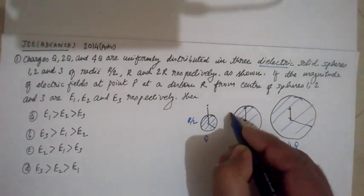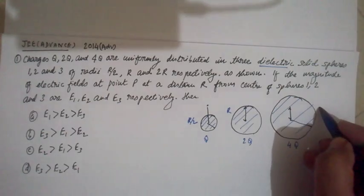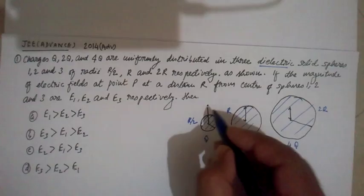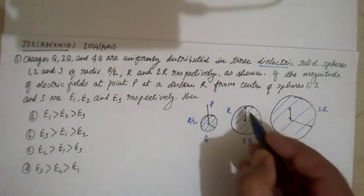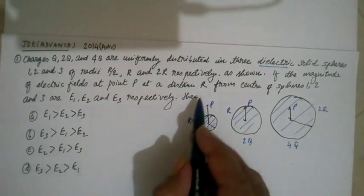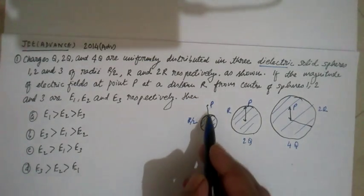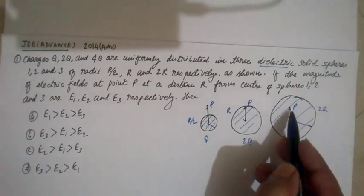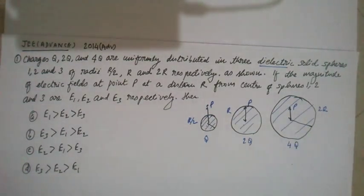If the magnitude of electric field at point P at a distance r from the center of each sphere - distance r, distance r, and distance r - has magnitudes E1, E2, and E3 respectively.